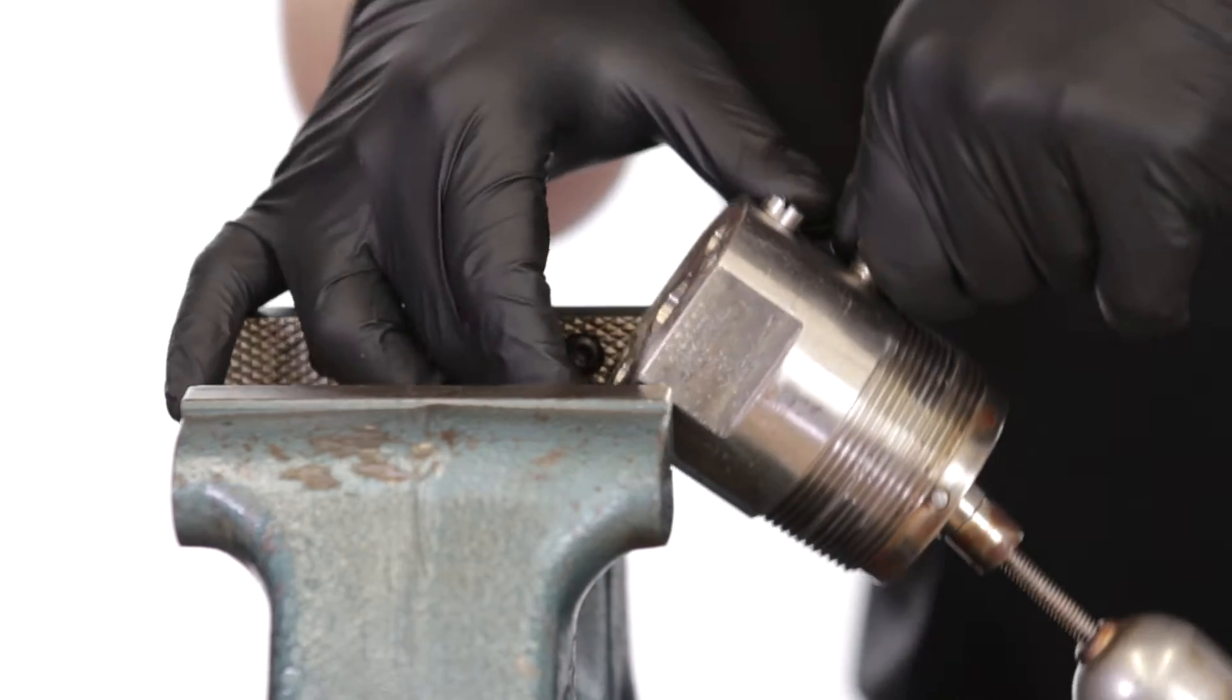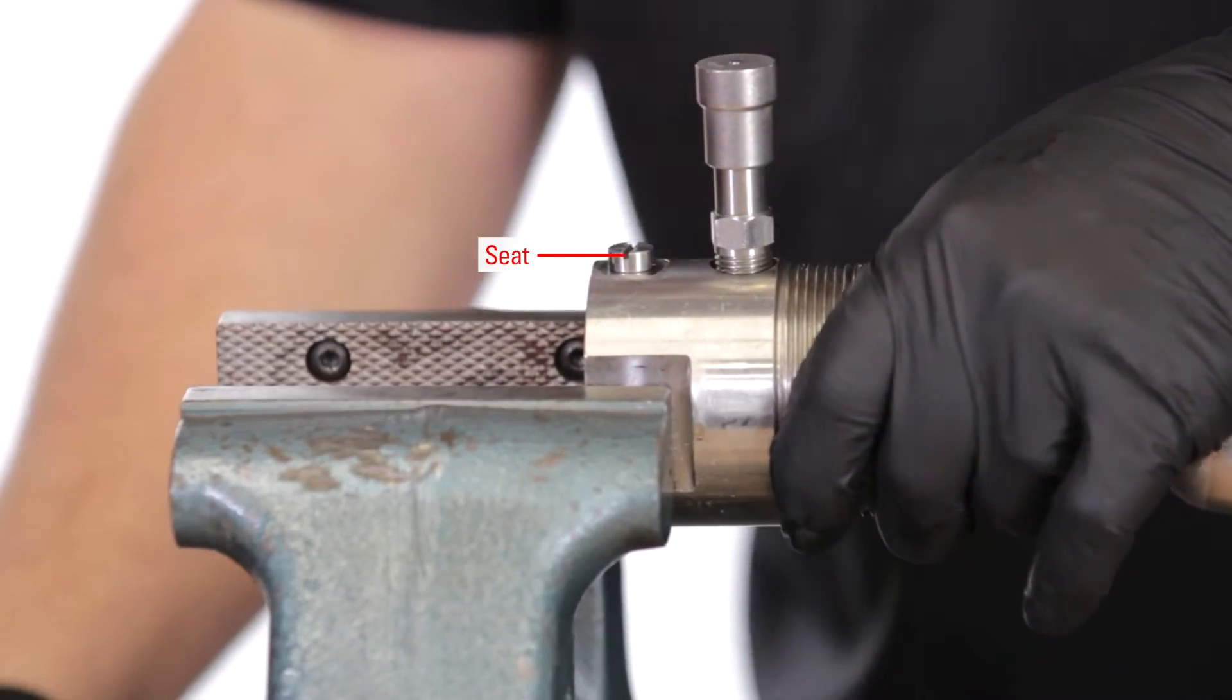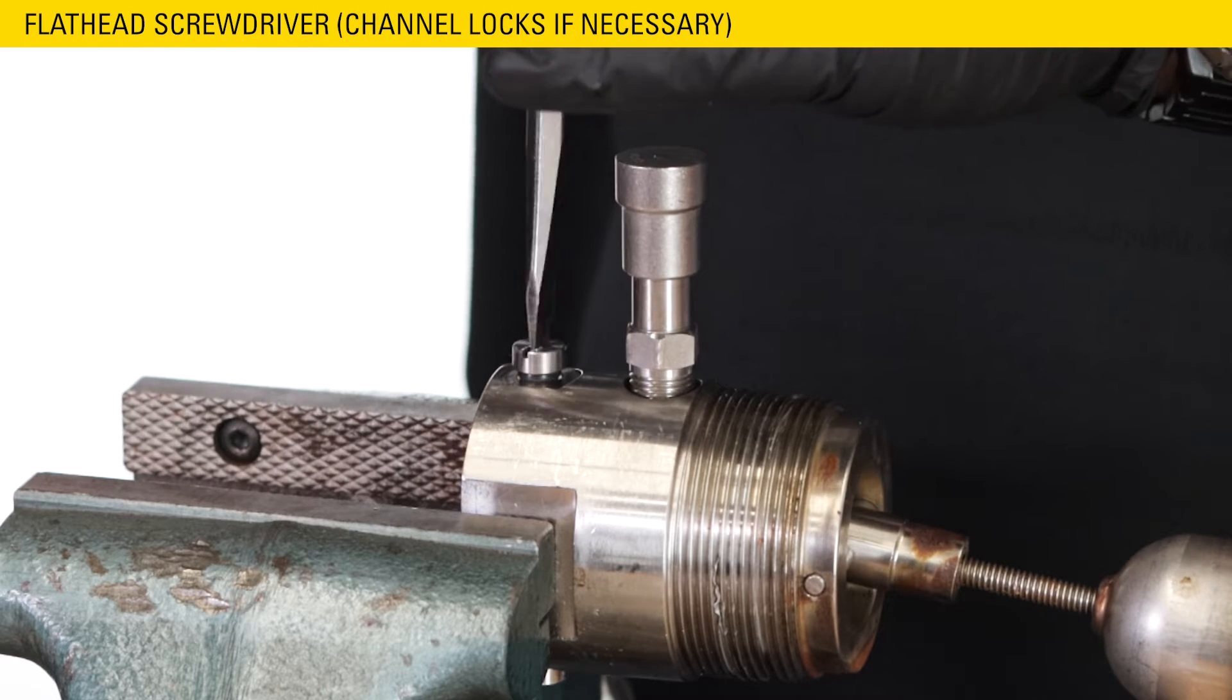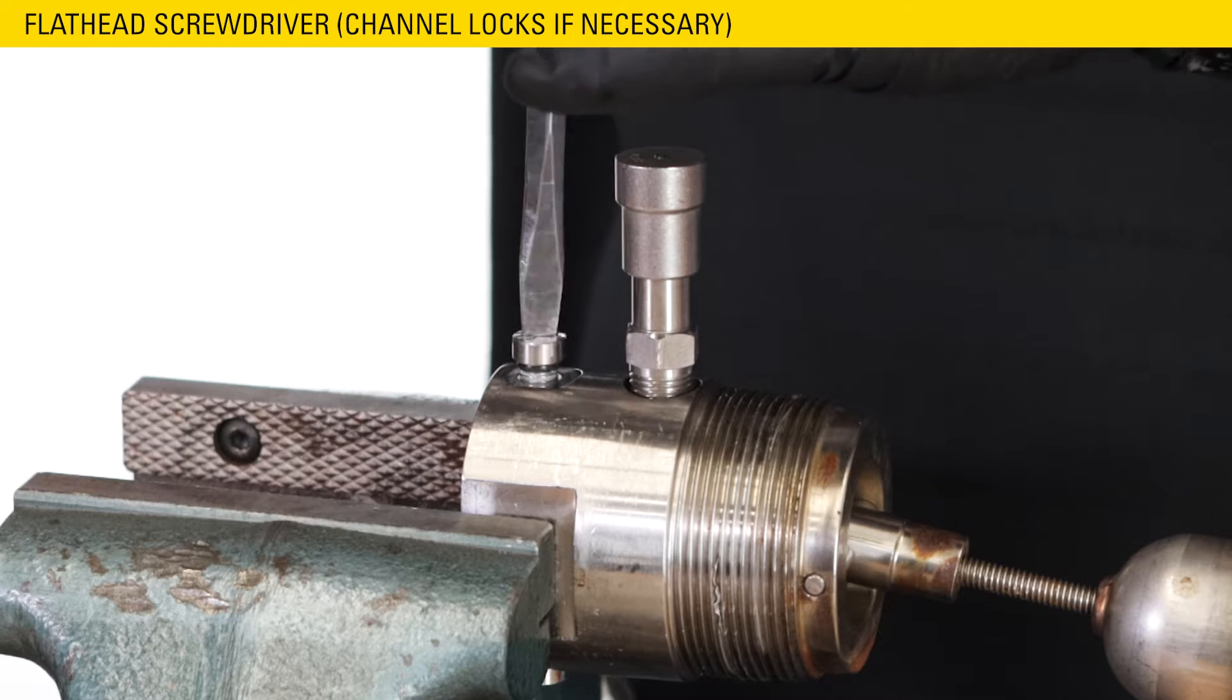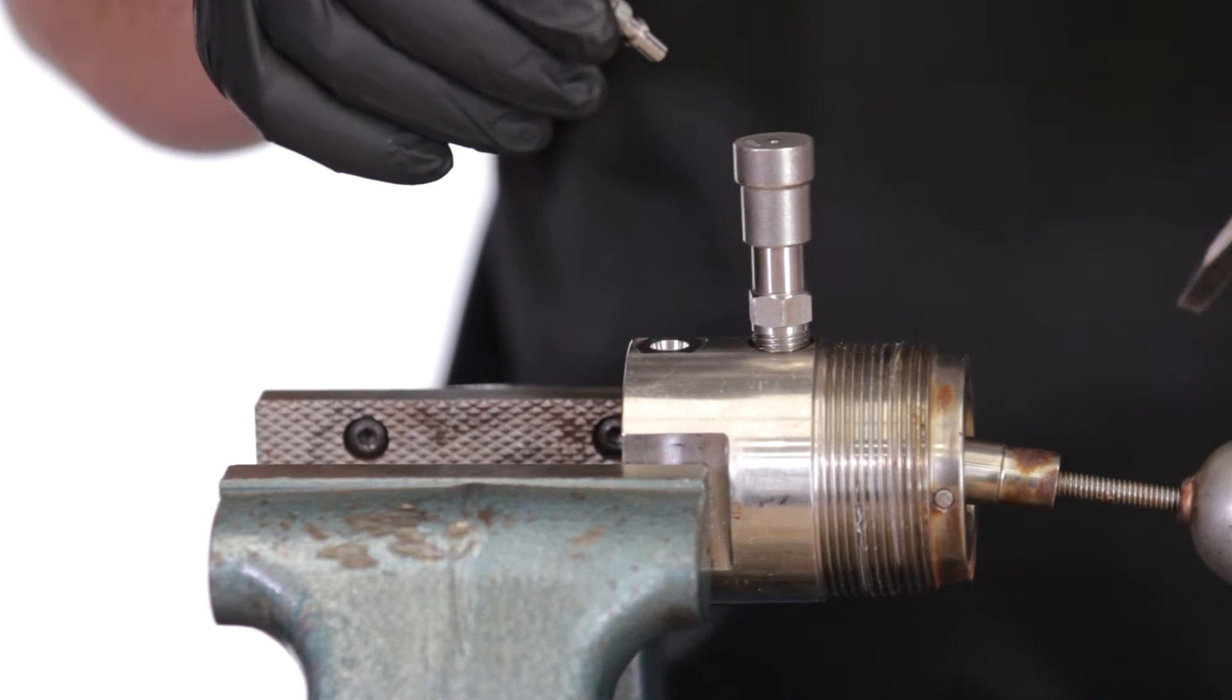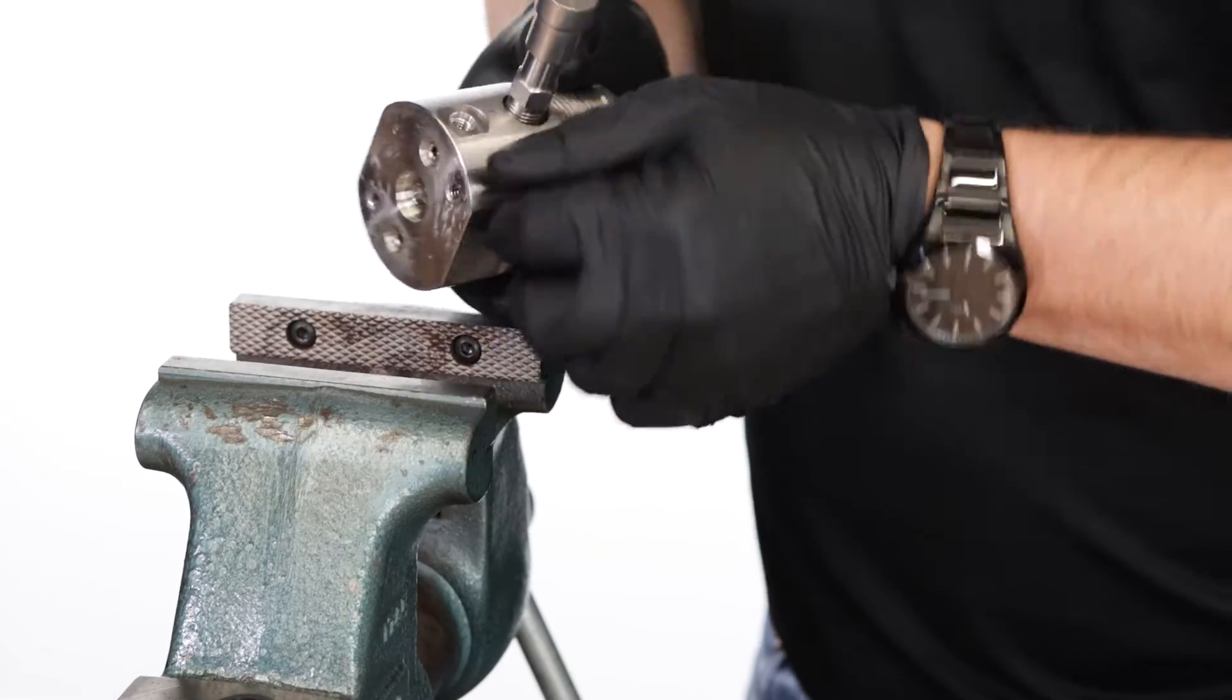Reposition the housing in the vise so that you can access one of the seats. Use a screwdriver to unthread the first seat. You can use channel locks to loosen the seat if it is stuck. Once you've removed the first seat, the shuttle may fall out depending on how the switch is oriented. If it hasn't fallen out, remove it when you flip the unit around.